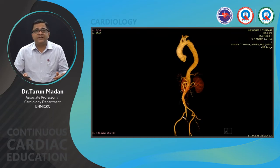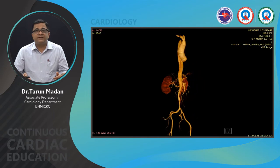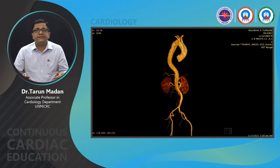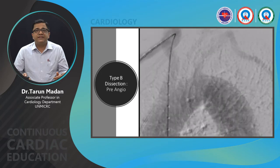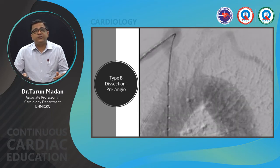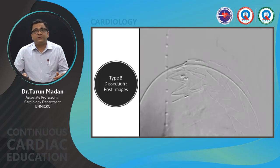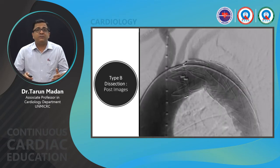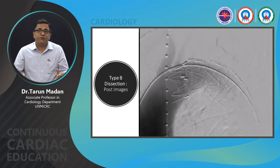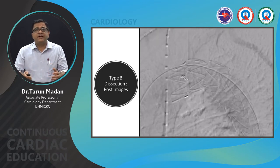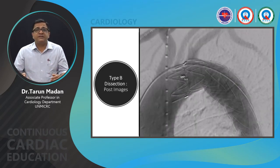In a type B dissection case, the dissection started distal to the subclavian artery, with false lumen expansion extending to the left common iliac artery. DSA showed the dissection flap in the inner curvature, with blood flowing into both true and false lumens. After stent deployment in the true lumen across the left subclavian artery, the true lumen widened, pressurizing the true lumen and depressurizing the false lumen.